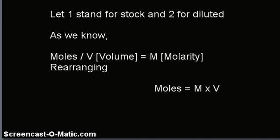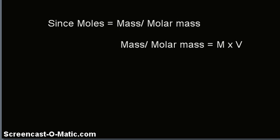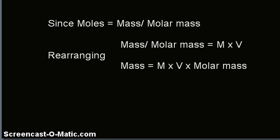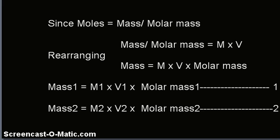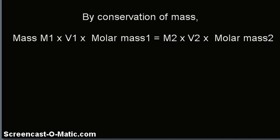We are doing this rearrangement in order to get mass in the equation. Since moles is equal to mass divided by molar mass, mass divided by molar mass is equal to M into V. Rearranging, mass is equal to molarity into volume into molar mass. Therefore, mass 1 = M1 × V1 × molar mass 1, and mass 2 = M2 × V2 × molar mass 2.